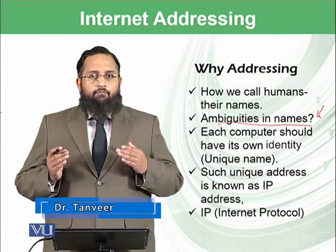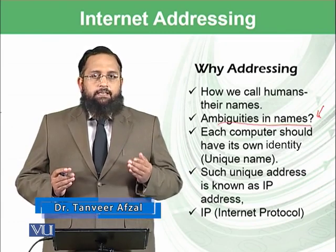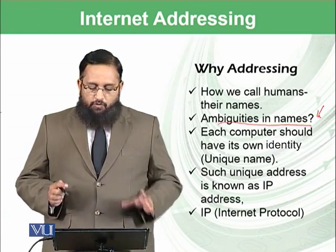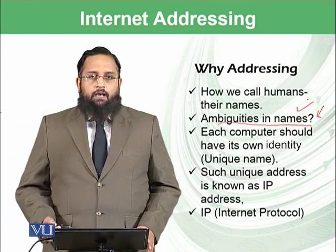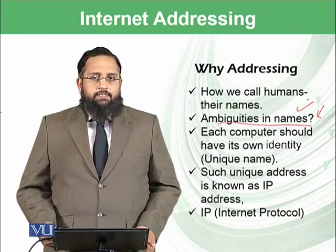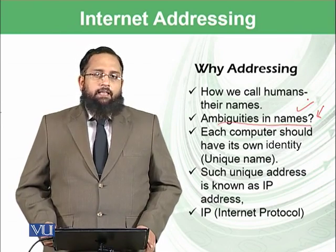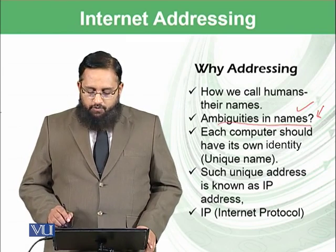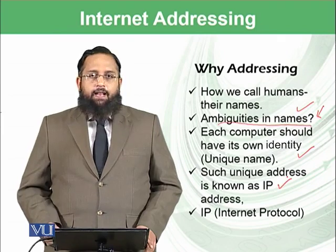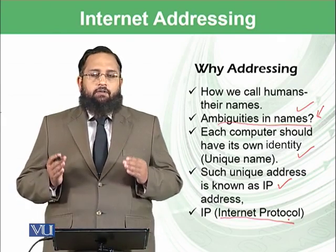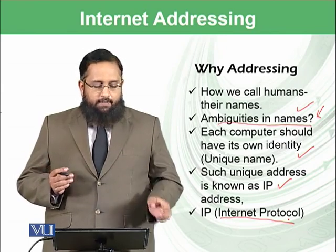However, when we want to give names to computers, it is mandatory that we assign very unique names to each computer so that there are no ambiguities when computers are going to interact with each another, because computers are not intelligent enough like humans to understand which Khalid Walid they are talking about. So each computer will have its own identity, and such a unique address is known as IP — which is basically a short form of Internet Protocol. How these IPs are assigned to computers we will learn in this module.